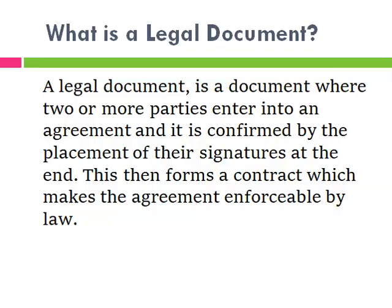Let's get the ball rolling by first looking at what a legal document is. A legal document is a document where two or more parties enter into an agreement, confirmed by the placement of their signatures at the end. This then forms a contract, which makes the agreement enforceable by law — meaning that if one party fails to carry out their side of the agreement, the other party can take them to court to seek action.